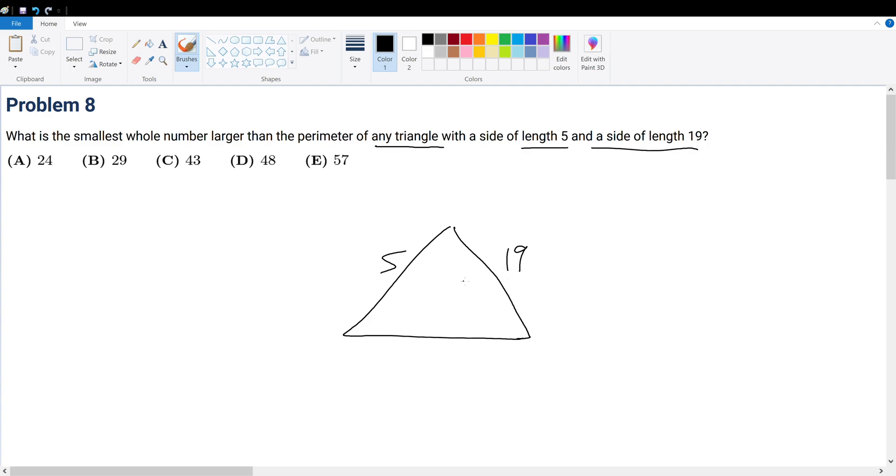Well, one property of triangles is this: the sum of two side lengths must be larger than the third one.